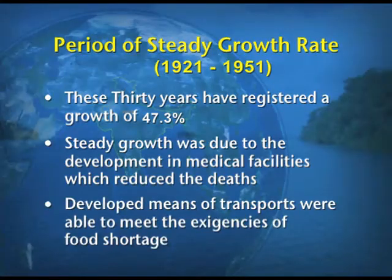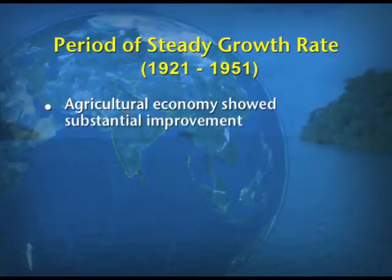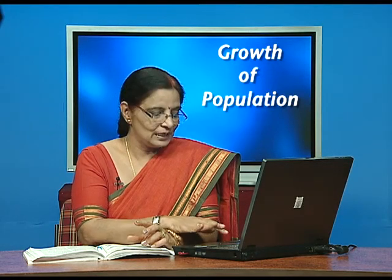Another factor was developed means of transportation, which helped meet food shortages in certain areas. The agricultural economy also showed substantial improvement, with the Green Revolution increasing agricultural production across the country. Additionally, the crude death rate declined while the crude birth rate remained high, contributing to steady population growth.